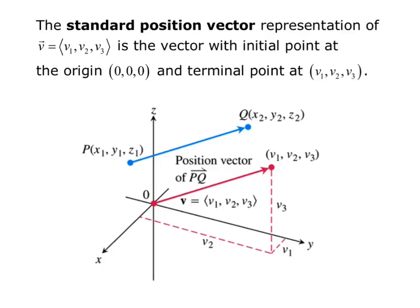The standard position vector representation of vector v, and we're working in R3, so it's v1, v2, v3 are the components of vector v, is the vector with initial point at the origin (0, 0, 0) and terminal point at the point (v1, v2, v3). So again, the standard position vector has initial point at the origin.